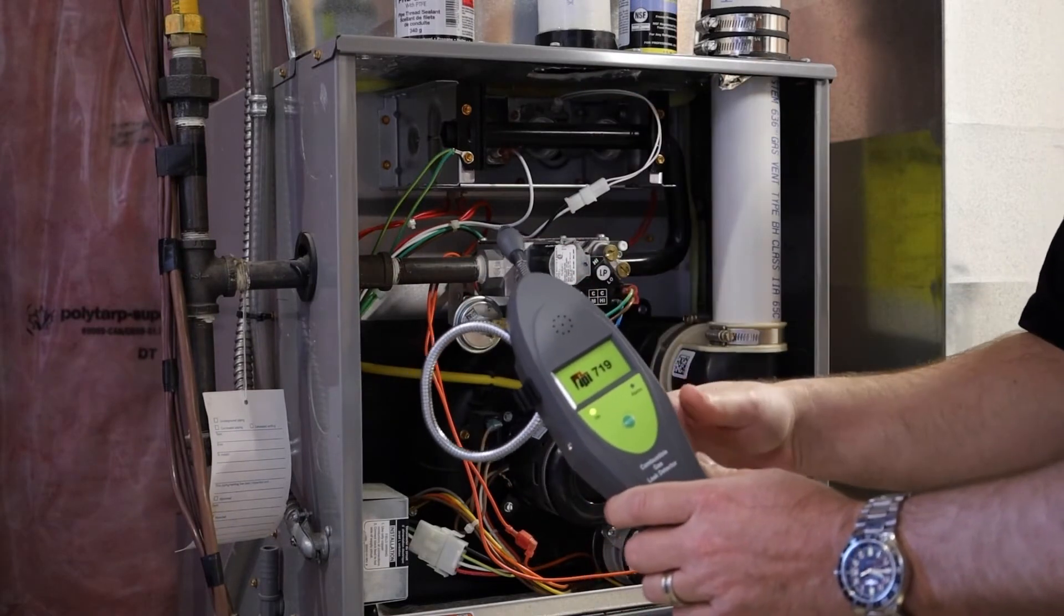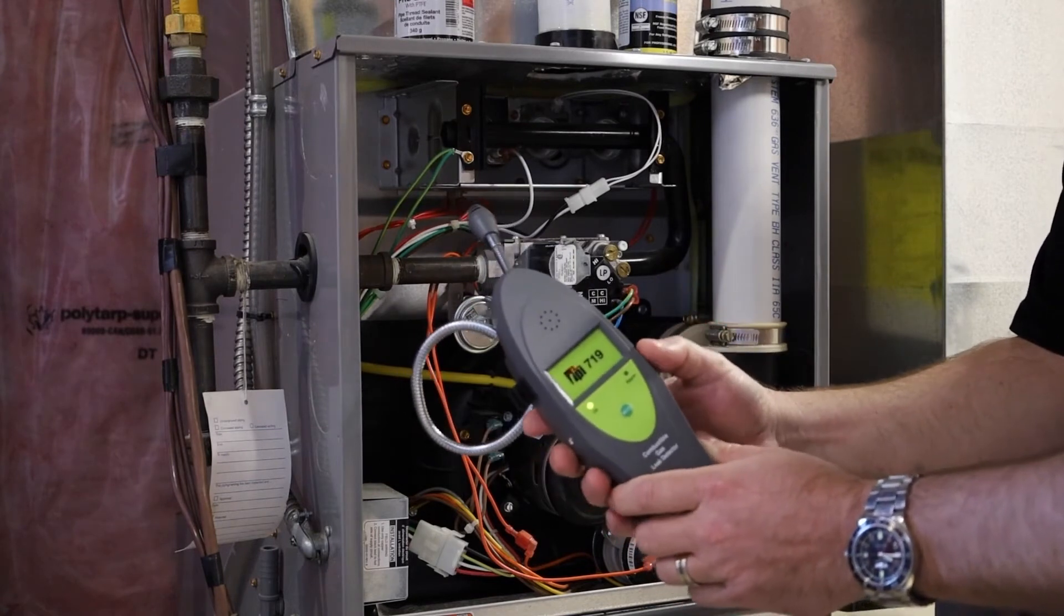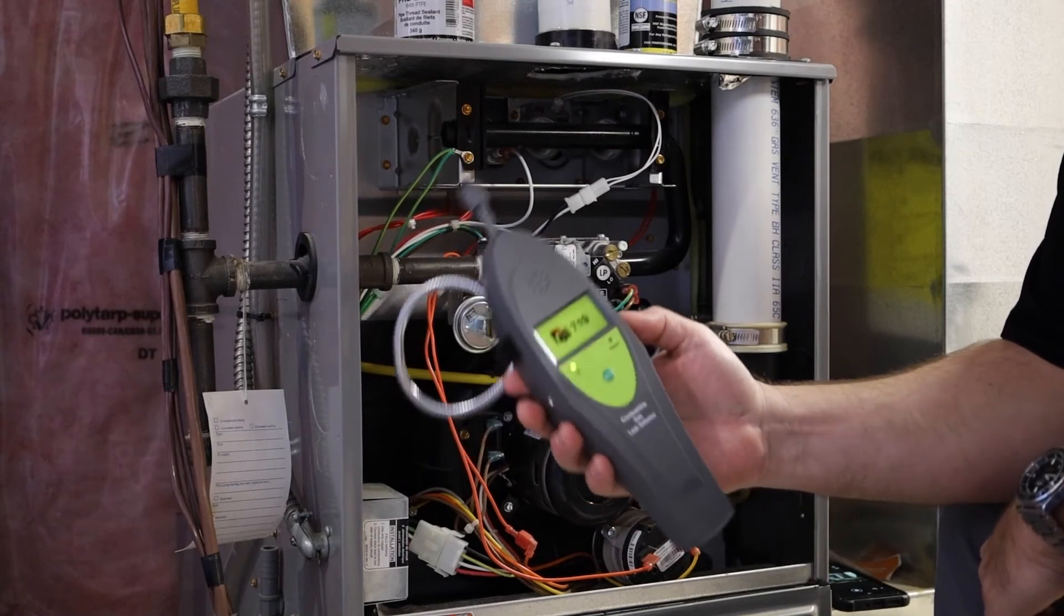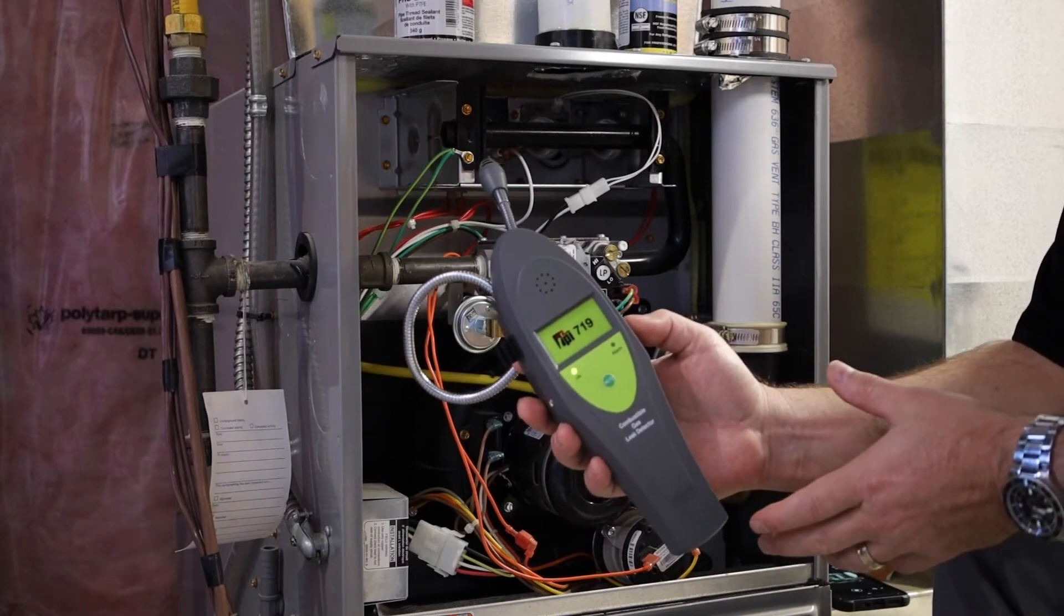Again working with fresh pipe dope you can do the same thing. Hold it above the jar of your pipe dope, zero it out and continue looking for your leaks. That's the 719 combustible leak detector. Again we'll do all your combustible gases.